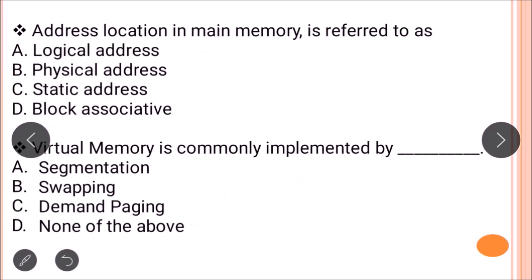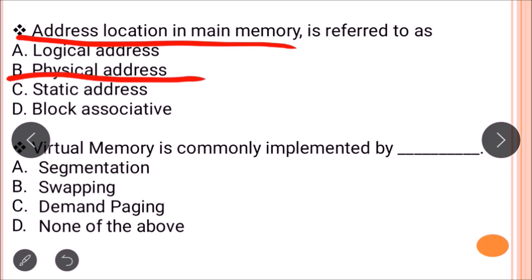The next question is: the address location in main memory is referred to as? When any particular page or process is stored in main memory, its address location is called the physical address. The correct answer is physical address.